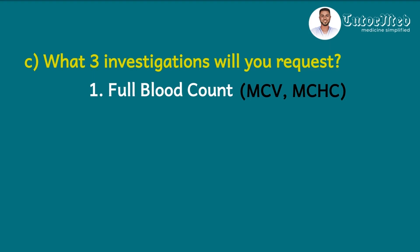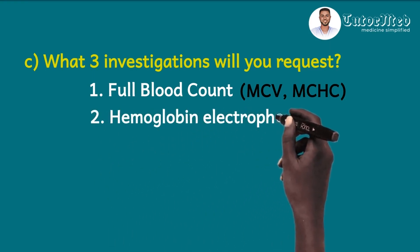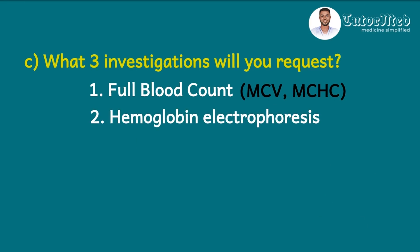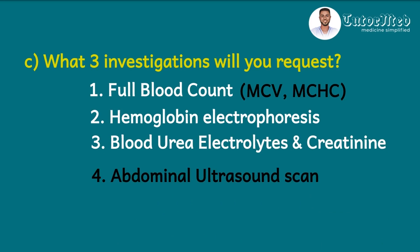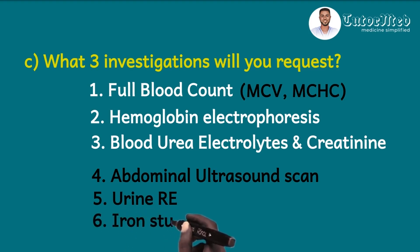Other investigations include Hb electrophoresis to determine whether there is sickle cell disease and, if so, what the genotype is. We can do blood urea electrolytes and creatinine for suspected CKD, and an abdominal ultrasound looking for sonographic features of CKD, which can also identify polycystic kidney disease. Based on the BUE creatinine, if renal function is not good, we can do a urine routine examination to find evidence of renal damage. We can also do iron studies if the red cell indices point to iron deficiency anemia, reticulocyte counts, and a peripheral blood smear, depending on what we find in previous investigations.